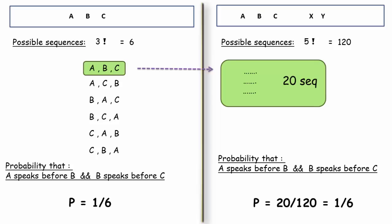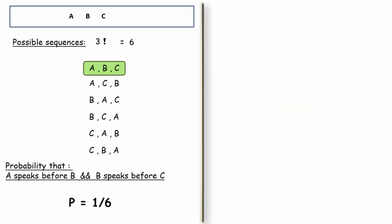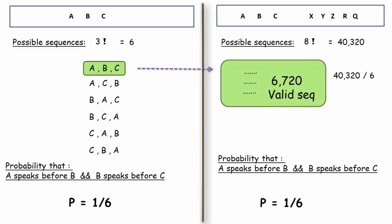What we conclude here is, we can ignore all the persons whose order doesn't matter and calculate the probability based on persons whose sequence matters. That will make the calculation much easier. Here is a quick calculation based on 8 persons. Still, the probability is going to be 1 by 6.